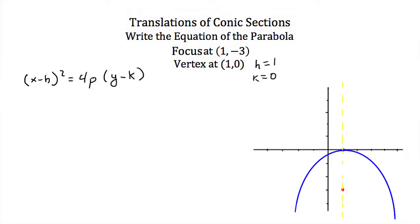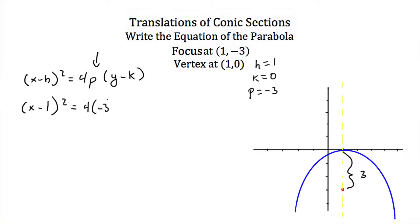We can also find our p-value. Our p-value is the distance between our vertex and our focus — this distance is 3. However, this parabola opens downward, which means our p-value is going to be negative. So p is equal to -3. If we plug all this in, we'll have (x - 1)² = 4 × (-3) × (y - 0), which simplifies to (x - 1)² = -12y.